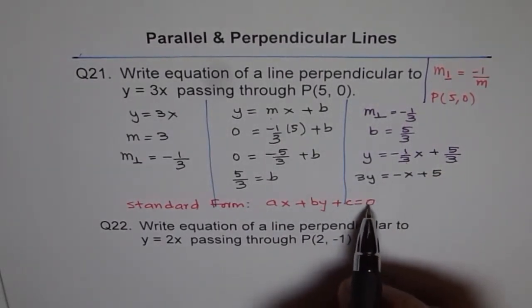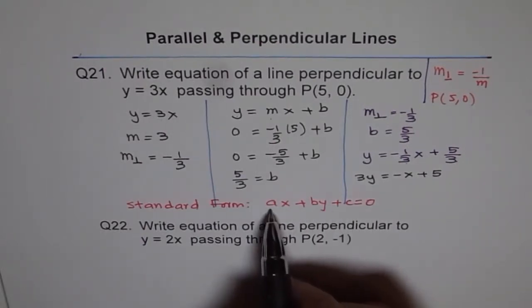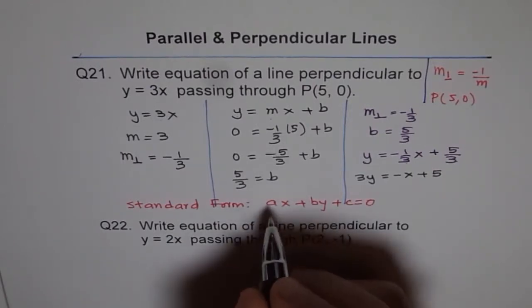Second, we want 0 on one side, all other terms here. Another important thing is, a should be positive. I mean, x coefficient, these are called coefficients, right? So a, b are coefficients.